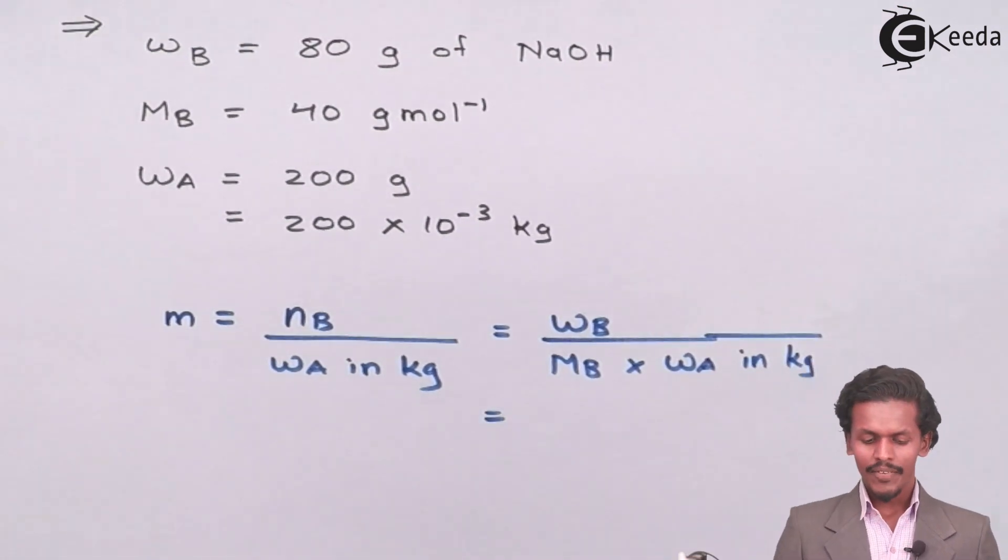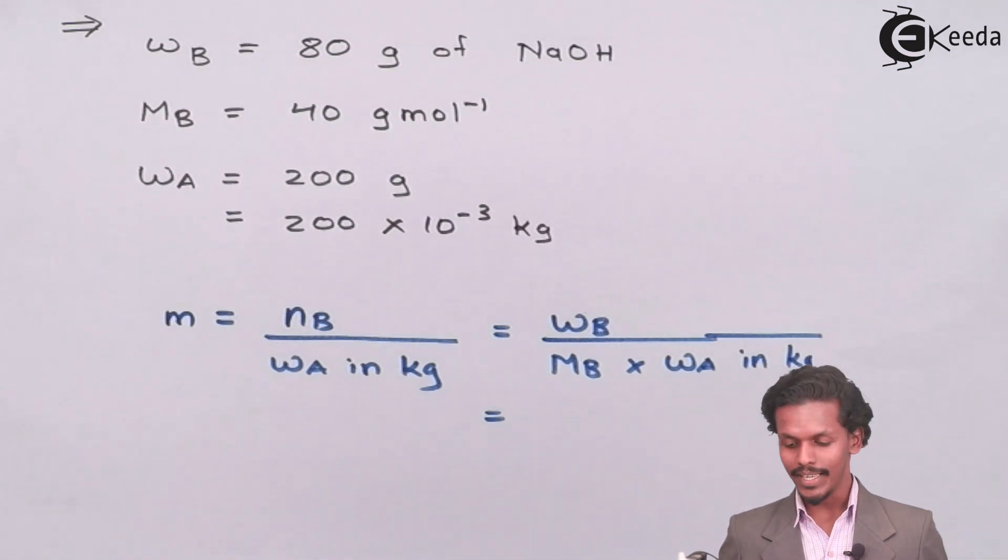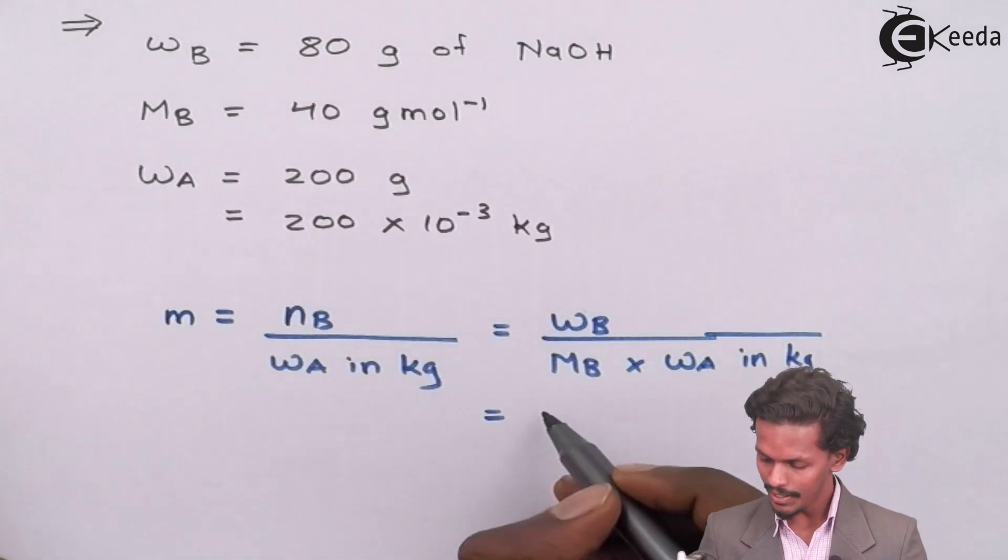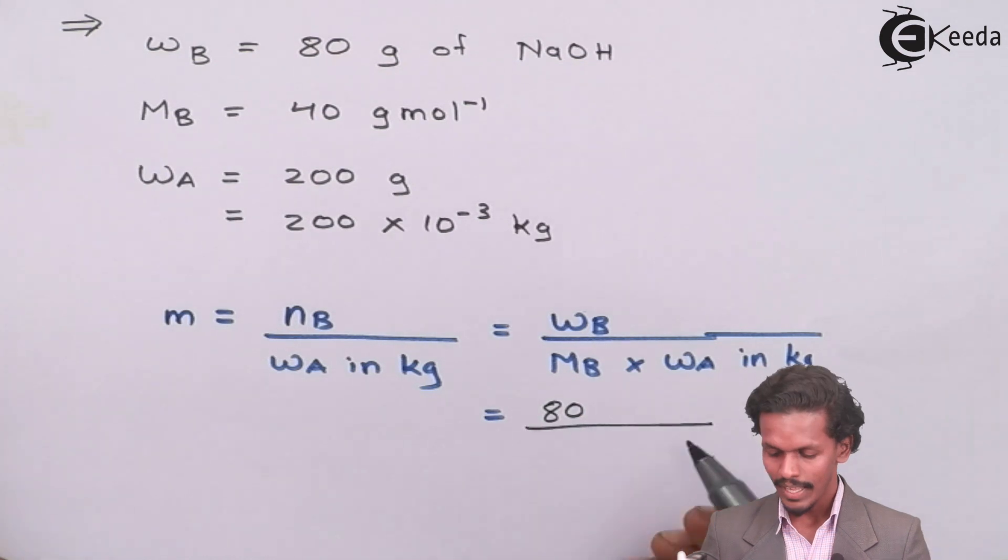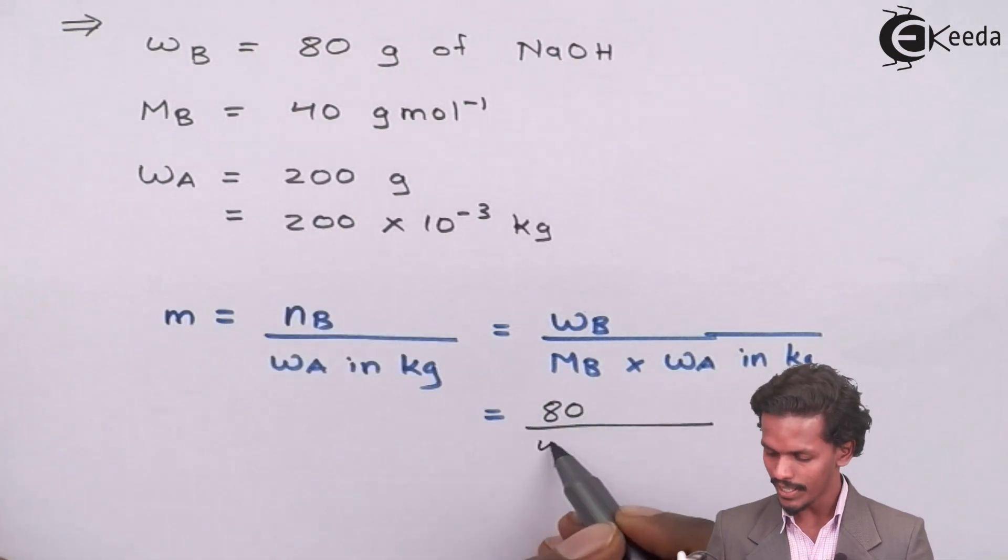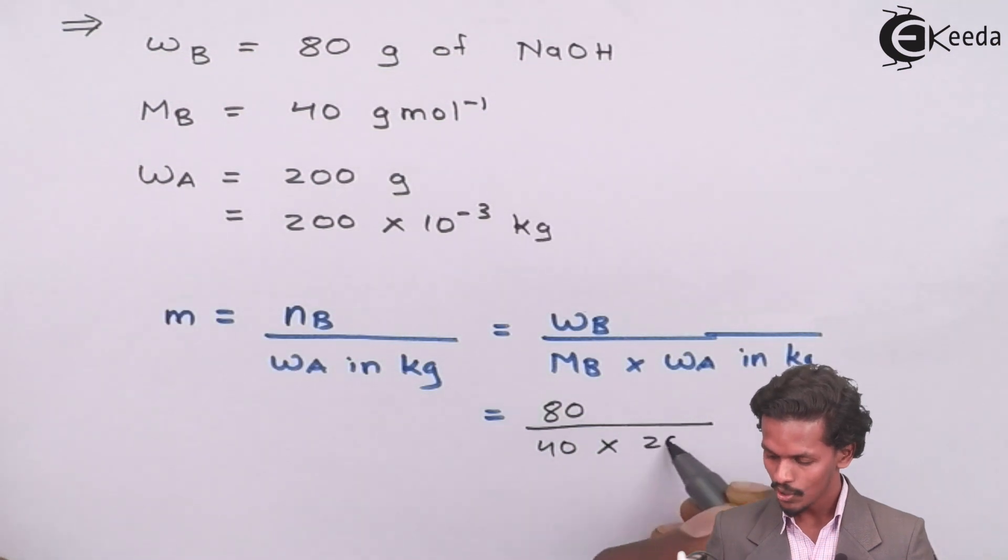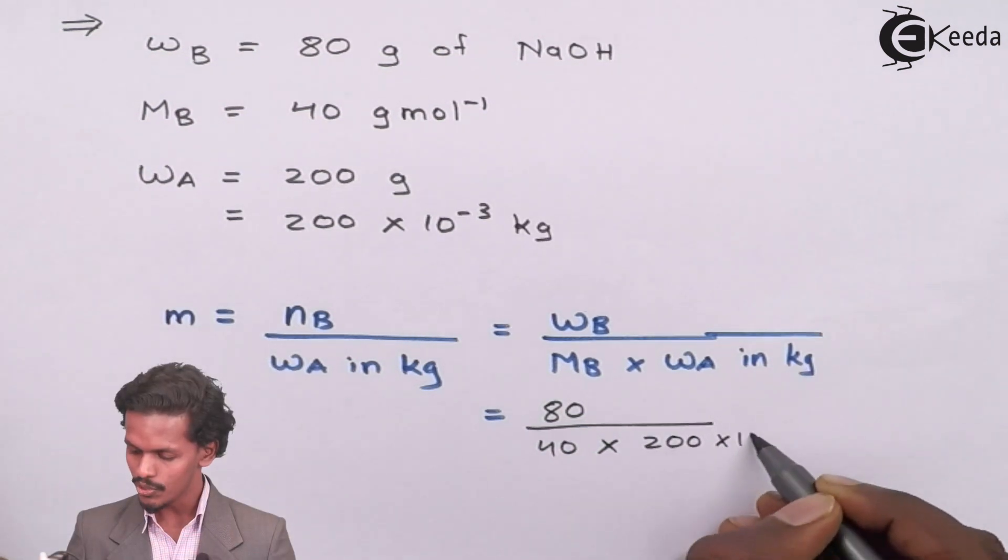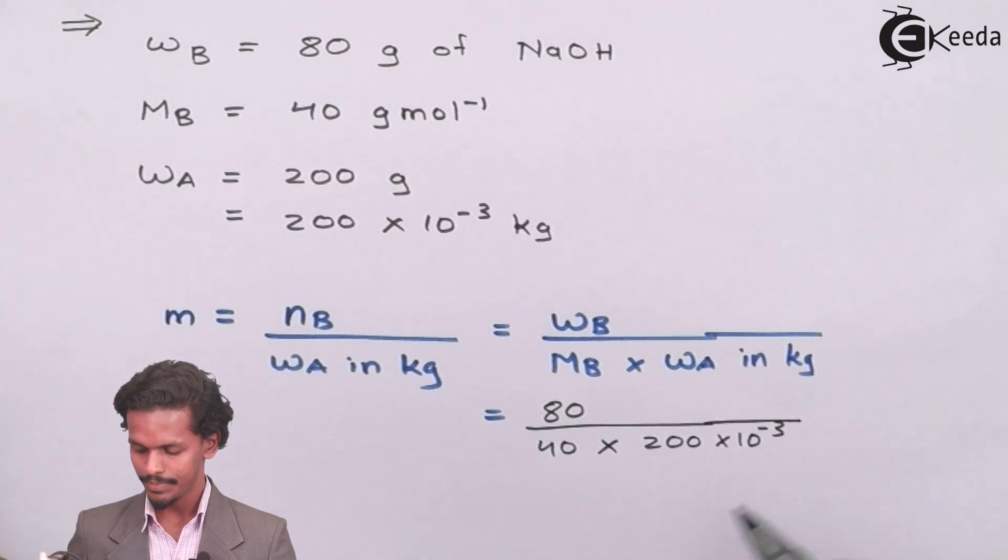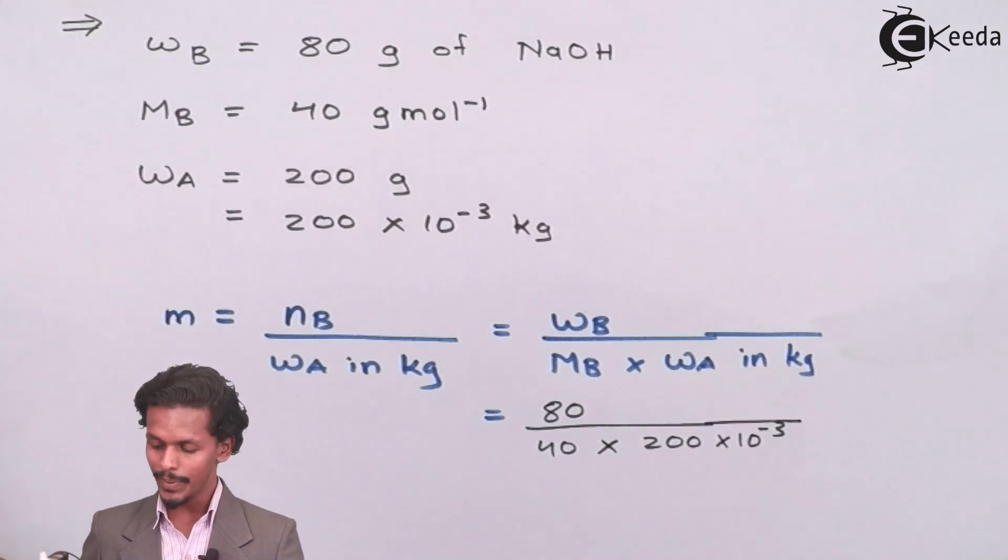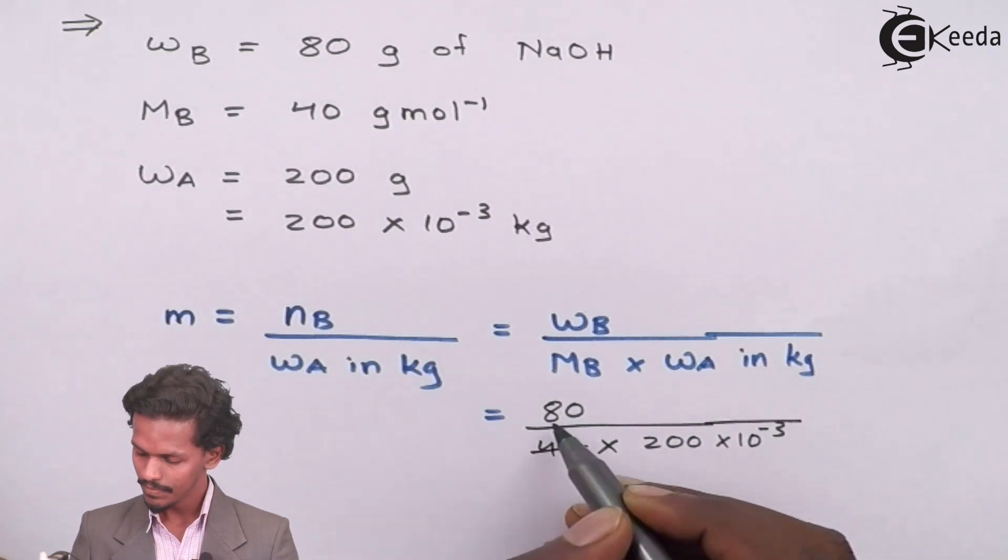So therefore we have the value of WB as 80, that of MB as 40, and that of WA as 200 × 10^-3. So therefore the answer would be 10.